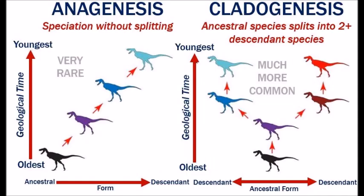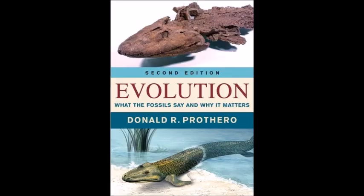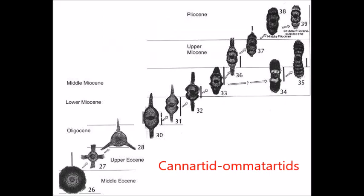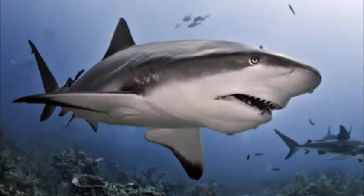Now, that doesn't mean punctuated equilibrium was proposed to replace phyletic gradualism — both observably occur in nature and relate to two different types of speciation, the slower uniform type called anagenesis, and the faster punctuated type called cladogenesis. Examples of phyletic gradualism are documented by the book Evolution: What the Fossils Say and Why It Matters by paleontologist Donald Prothero, such as the canarted-omatarted lineage of radiolarians. And an example of stasis would be the retention of similar body shapes in sharks since the Devonian.